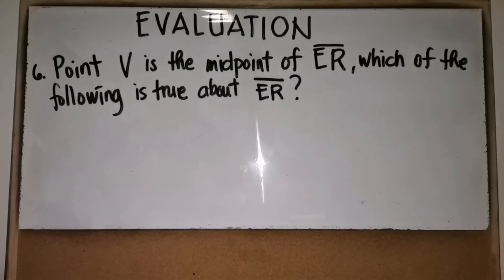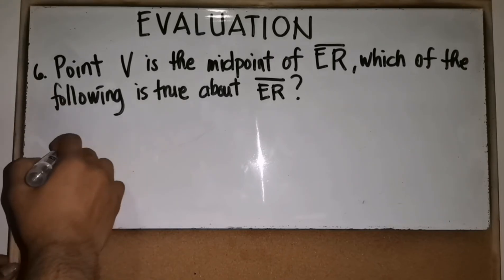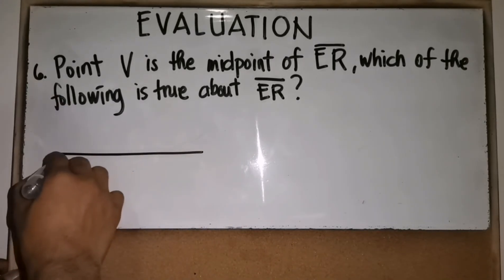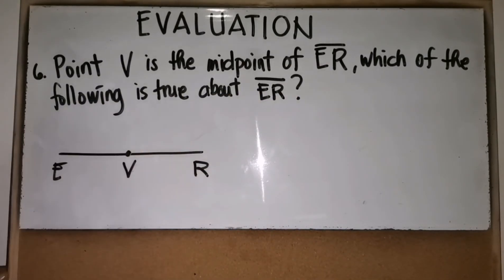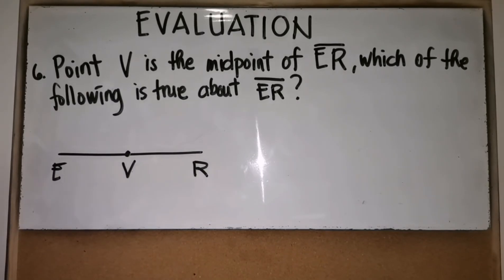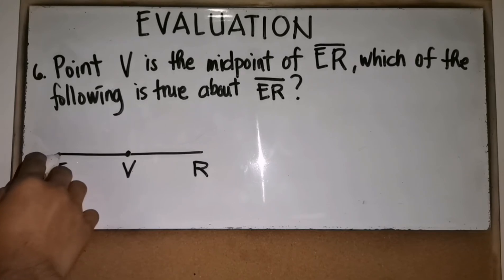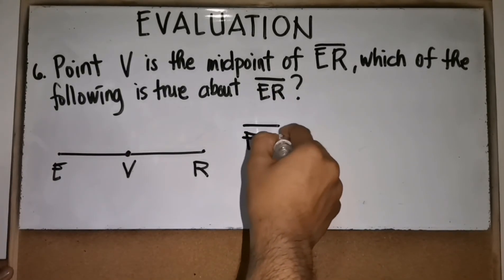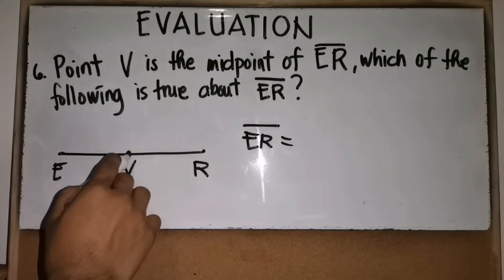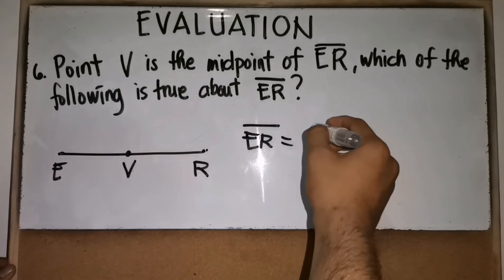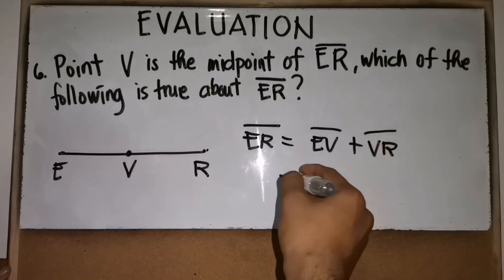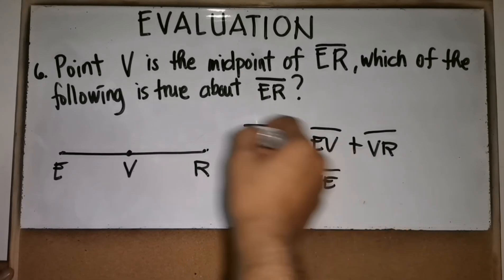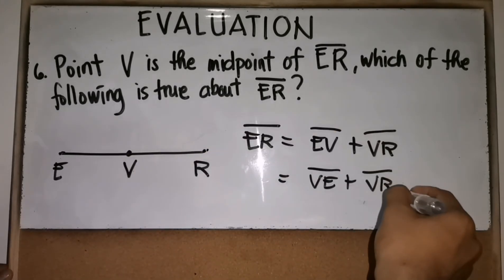Number six: point V is the midpoint of segment ER. Which of the following is true about ER? Segment ER equals the sum of its two parts: EV + VR. You can also write it as VE + VR — they are the same.